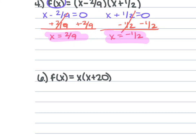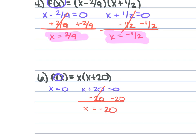For problem 6, we're given f(x) = x(x + 20), which is 0 = x(x + 20). Setting each part equal to 0: x = 0 and x + 20 = 0. Subtracting 20 from each side gives x = 0 and x = −20.